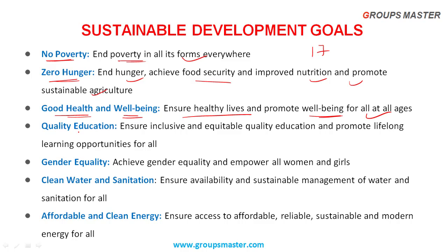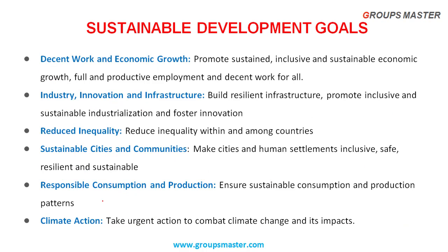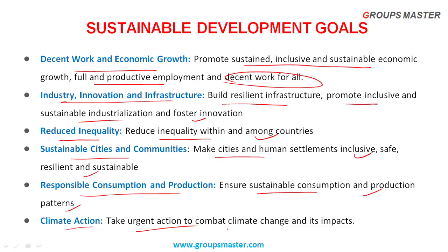Goal 4: Quality Education — ensure inclusive and equitable quality education and promote lifelong learning opportunities for all. Goal 5: Gender Equality — achieve gender equality and empower all women and girls. Goal 6: Clean Water and Sanitation — ensure availability and sustainable management of water and sanitation for all. Goal 7: Affordable Clean Energy — ensure access to affordable, reliable, sustainable and modern energy for all. Goal 8: Decent Work and Economic Growth — promote sustained inclusive sustainable economic growth, full and productive employment and decent work for all. Goal 9: Industry, Innovation and Infrastructure — build resilient infrastructure, promote inclusive sustainable industrialization and foster innovation. Goal 10: Reduce Inequality — reduce inequality within and among countries. Goal 11: Sustainable Cities and Communities — make cities and human settlements inclusive, safe, resilient and sustainable. Goal 12: Responsible Consumption and Production — ensure sustainable consumption and production patterns. Goal 13: Climate Action — take urgent action to combat climate change and its impacts.